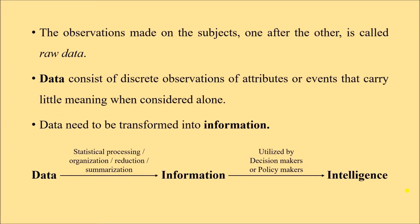So what do we mean by data? Data is nothing but observations. The observations made on subjects one after another are known as raw data. Data consists of discrete observations of attributes or events that carry little meaning when considered alone.